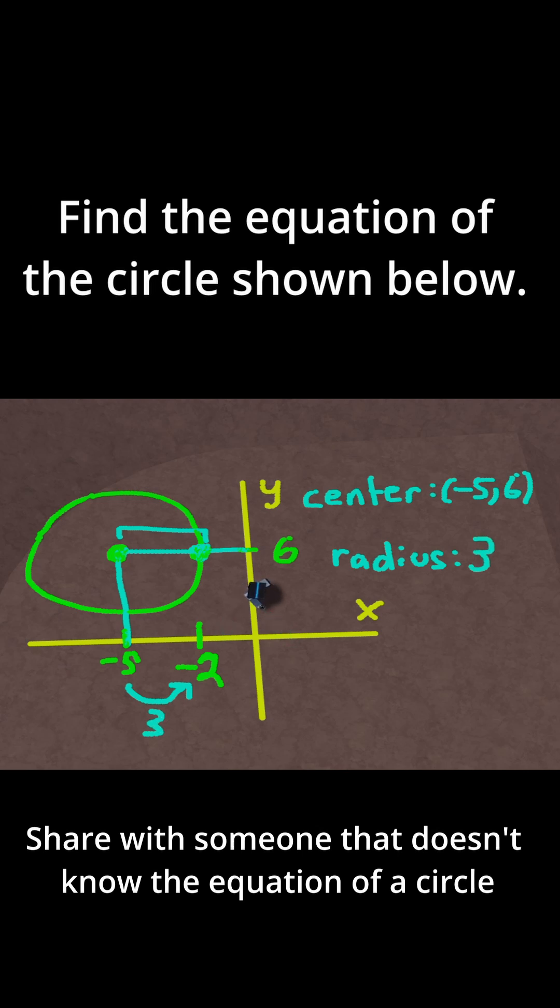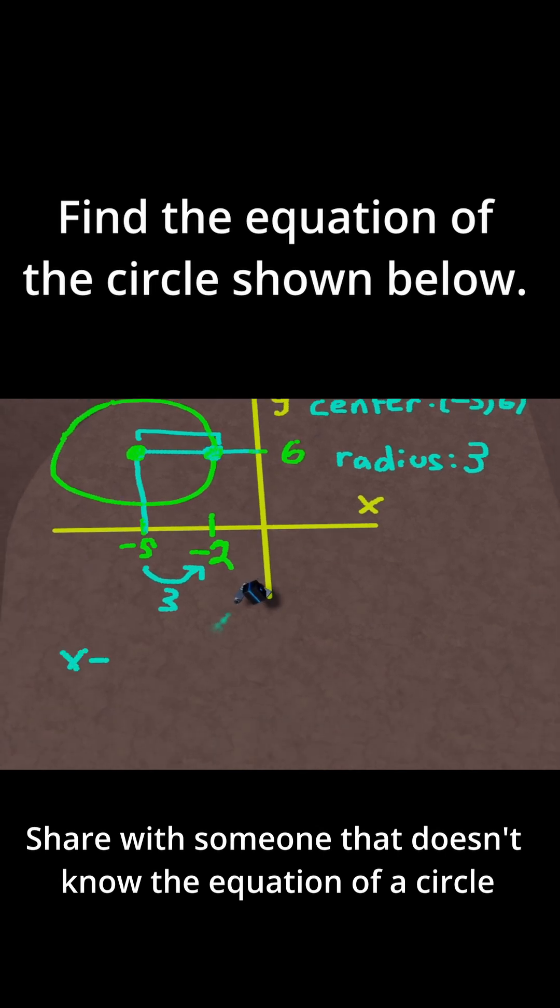So now let's use that to write the equation of the circle. So let me move down here. Remember the equation of a circle is just x minus h squared plus y minus k squared equals r squared.